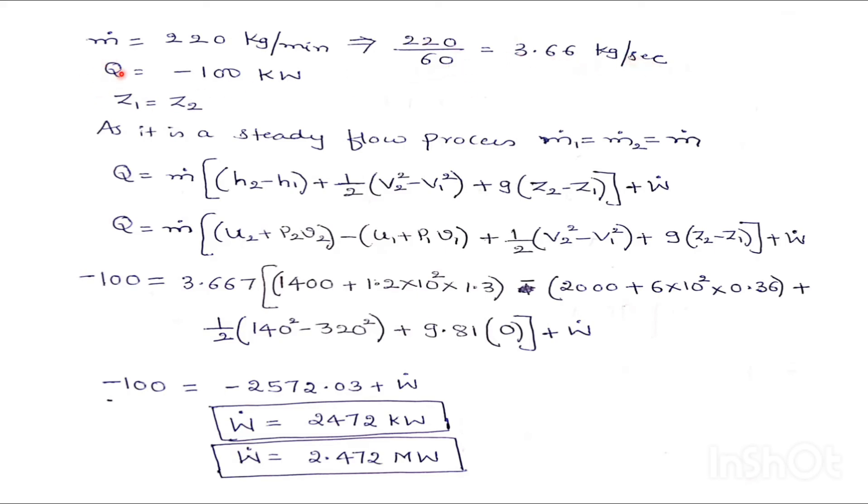So heat is rejected here, so minus 100 kJ per second or kilowatt. This heat is rejected here, it is minus. So potential energy is neglected. Z1 is equal to Z2, we will consider here. That is nothing but 0 only.